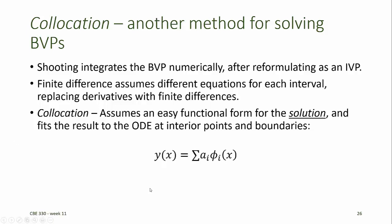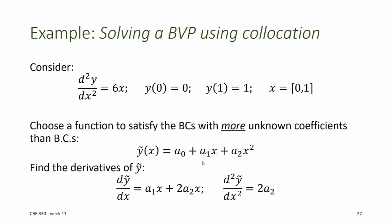In this method, the dependent variable y of x might be assumed to be some sum over functions of x, phi_i of x, where each of these functions is weighted with a coefficient a_i. Consider this second order ODE over the domain from 0 to 1, with a known value for y at 0 equal to 0 and a known value for y at 1 equal to 1. These are Dirichlet boundary conditions and we want to solve over the domain from 0 to 1.